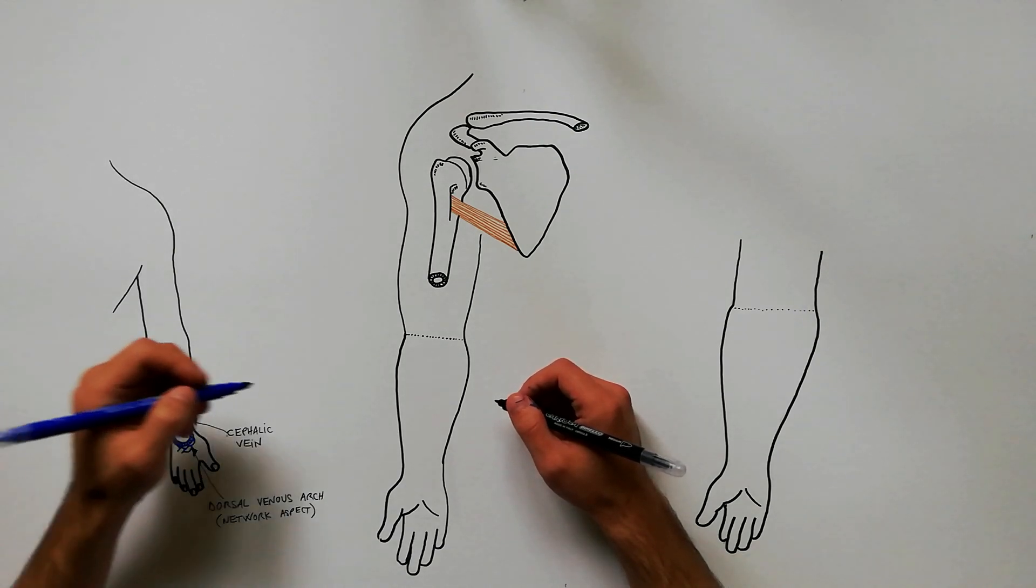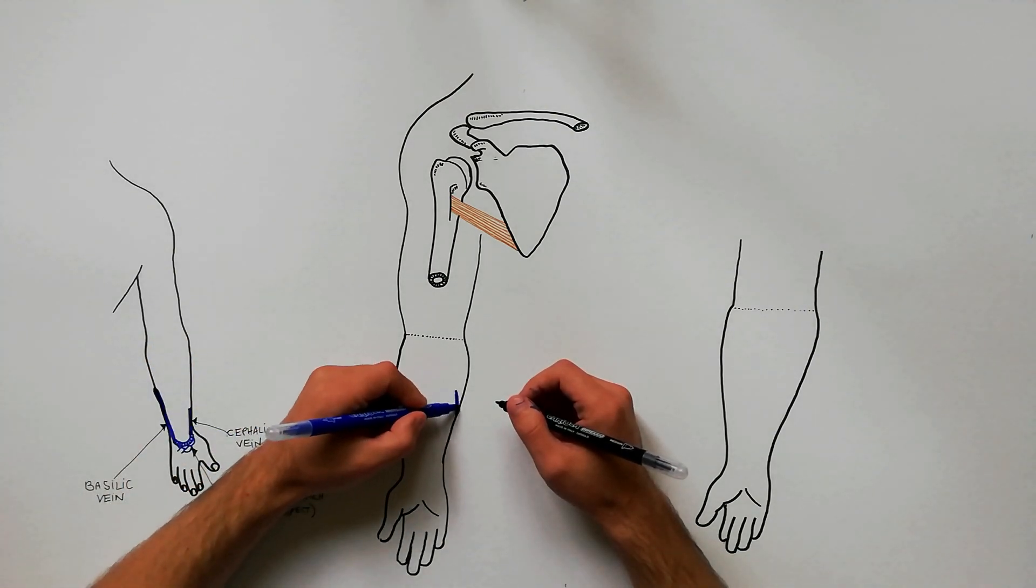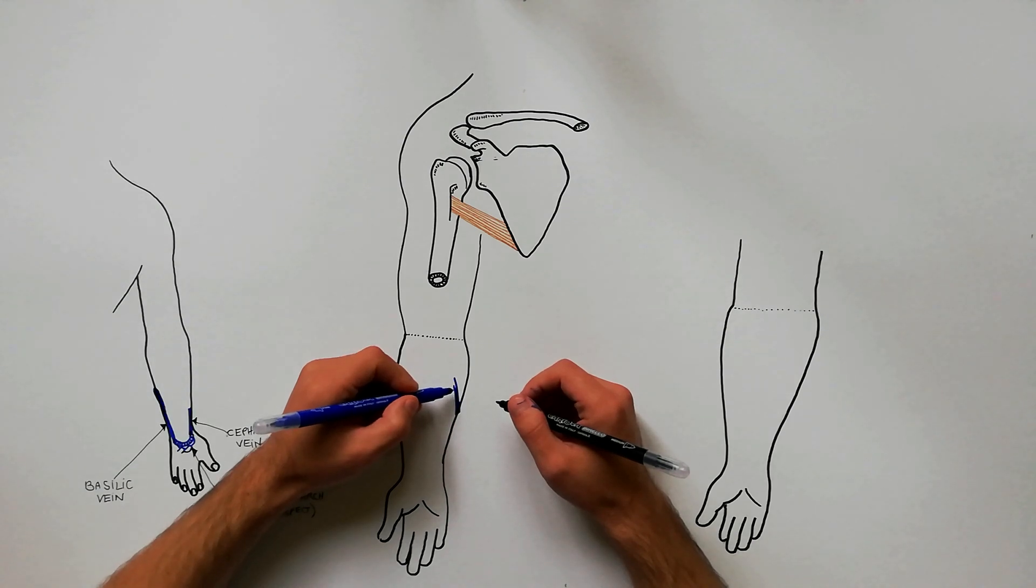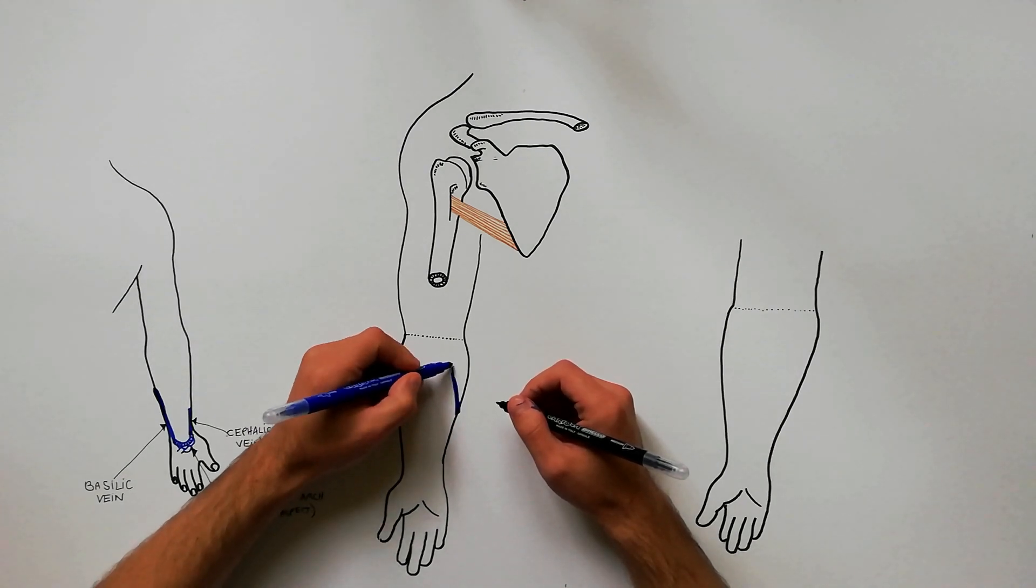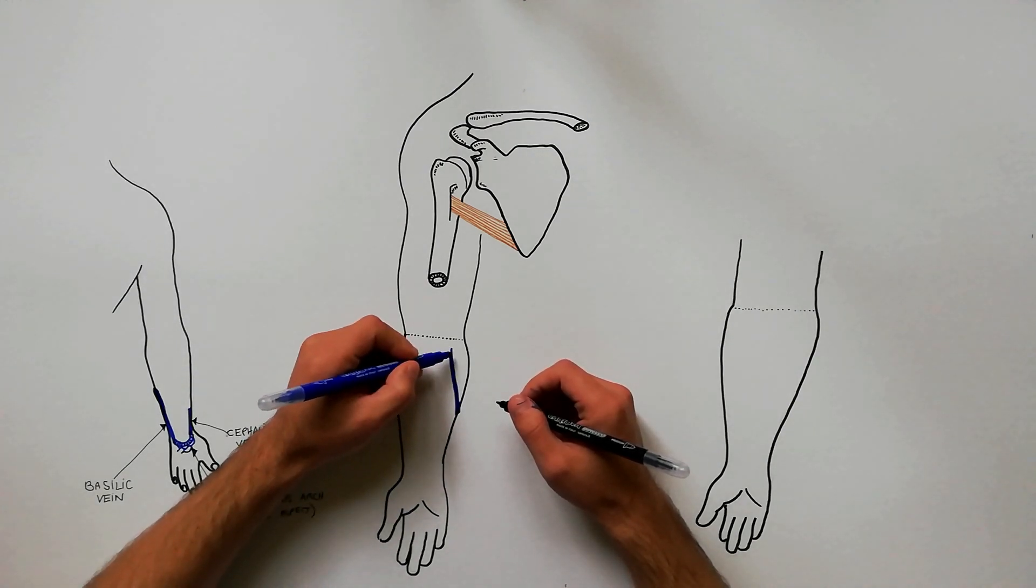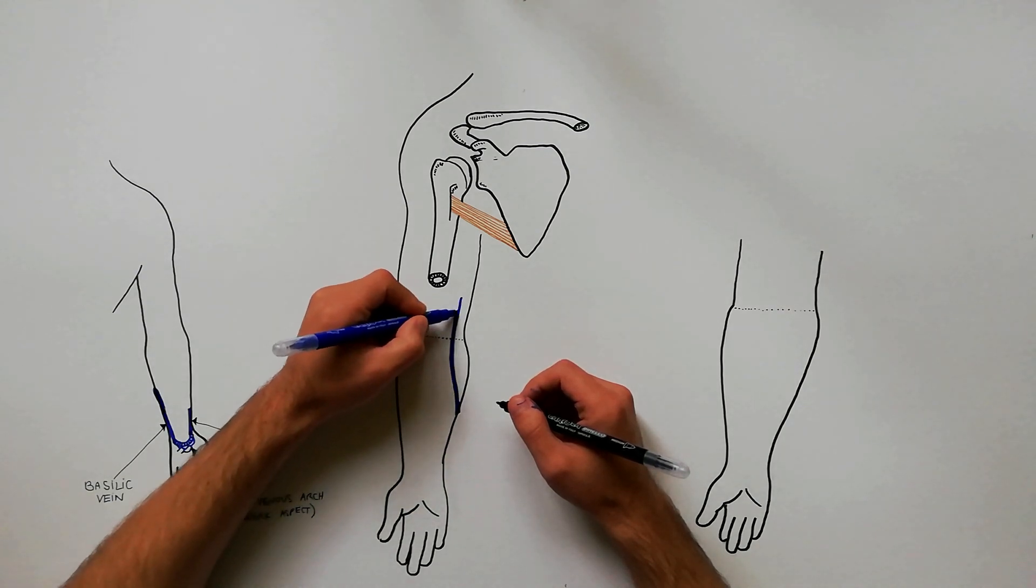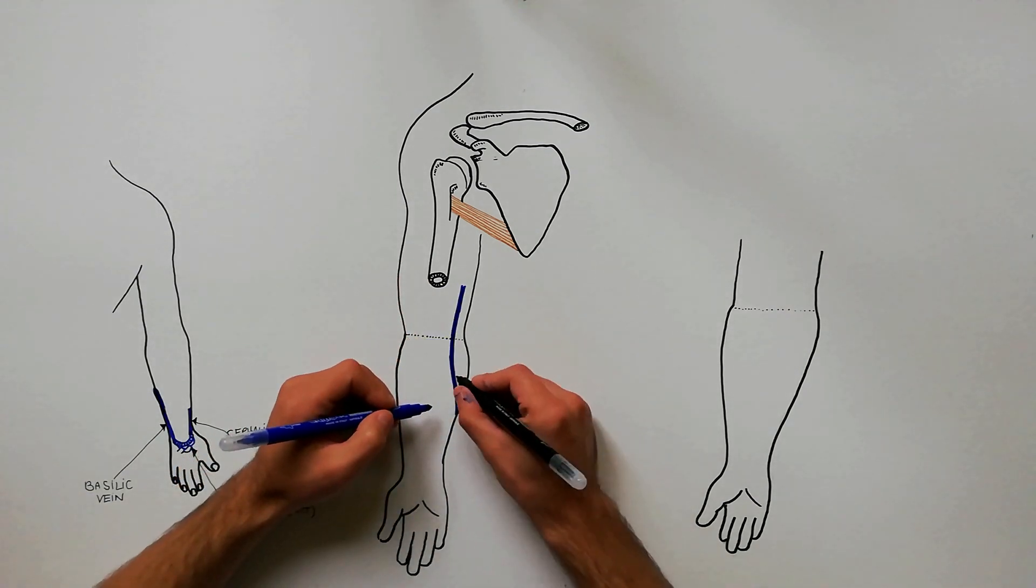It winds round this border near the elbow to reach the anterior aspect of the forearm, where it continues upwards in front of the elbow and then along the medial side of the biceps brachii.